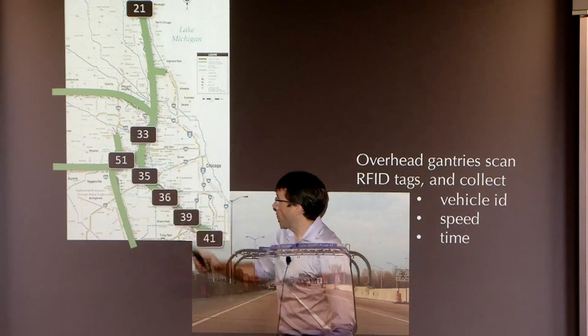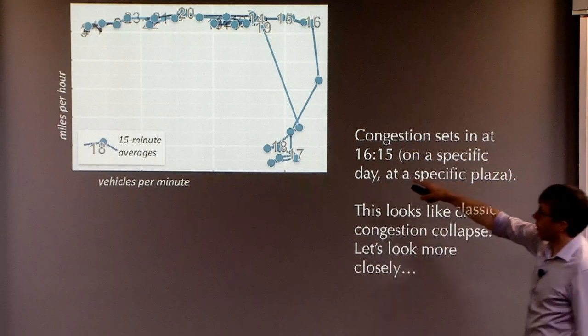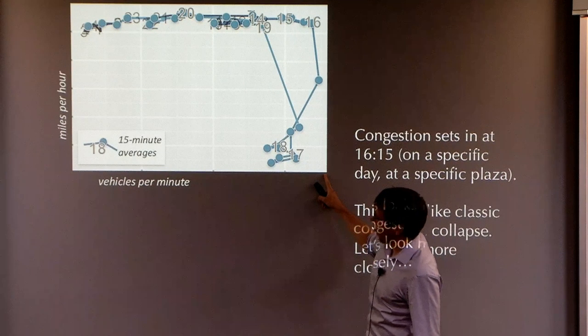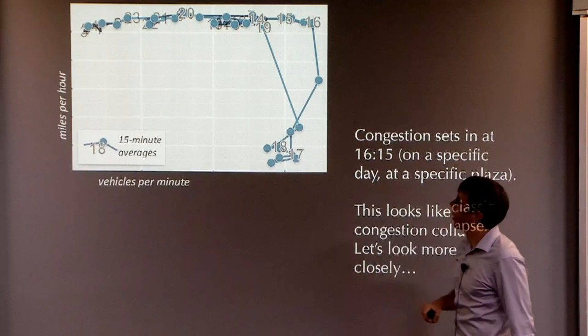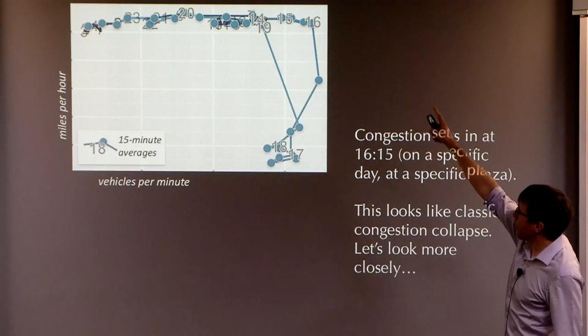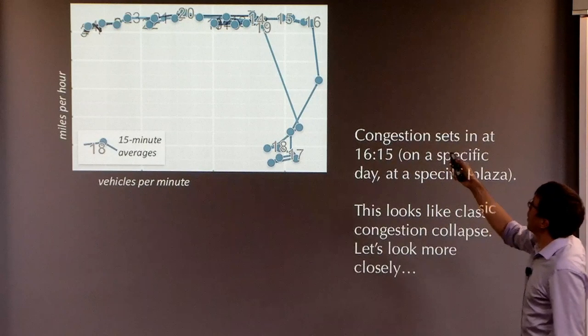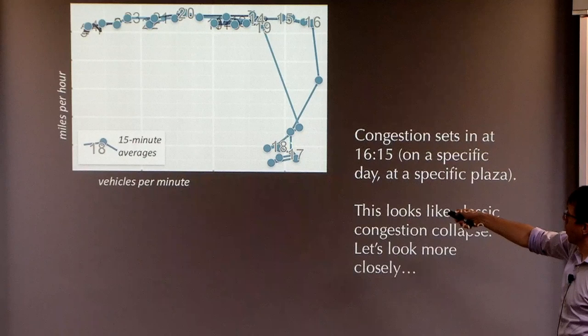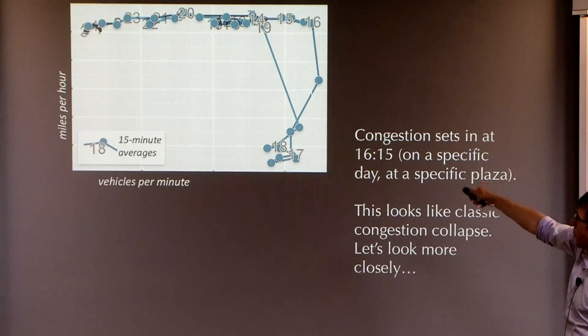I jumped into the data for plaza 35. I did one of these classic. This is a graph where it's got throughput on the x-axis, flow on the x-axis, and speed on the y-axis. And I've drawn a line. There's a dot at every 15-minute point in time and I've labeled them. So there's 4 p.m., 4.15, 4.30, 5, and so on. Around about 4.15 there's a massive drop in speed.